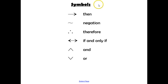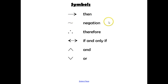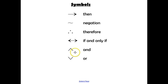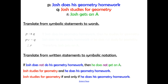Here are the symbols we'll use when discussing conditional statements in symbolic notation. This arrow means then. The squiggle is a negation, meaning not, doesn't, or isn't. Three dots means therefore. The double-sided arrow stands for if and only if. The upward symbol means and, and the downward symbol means or.